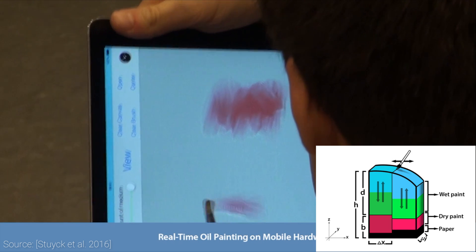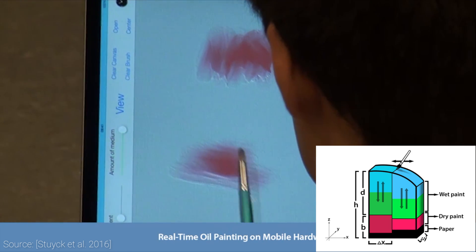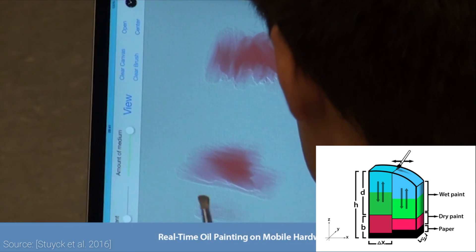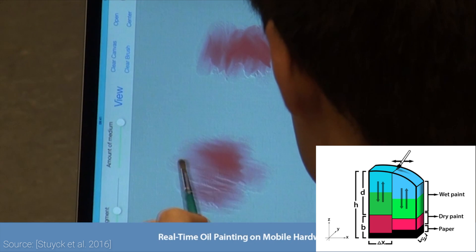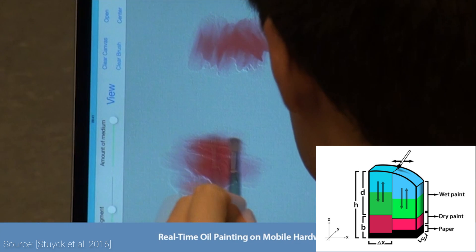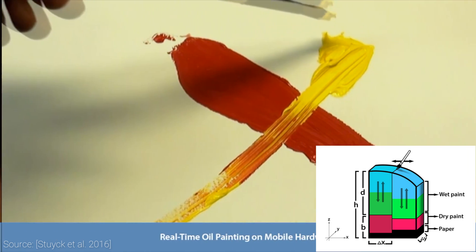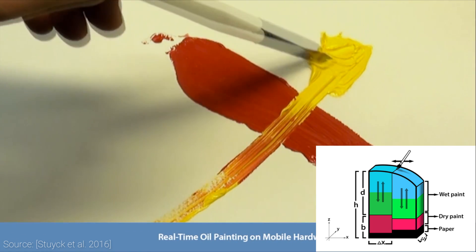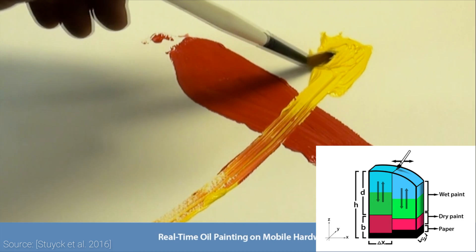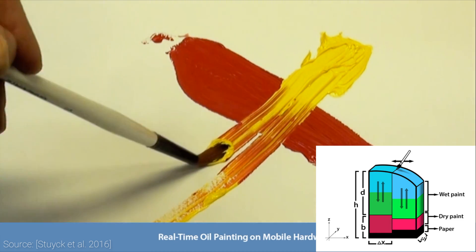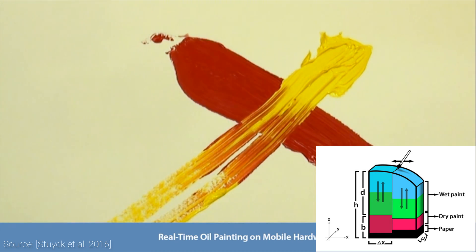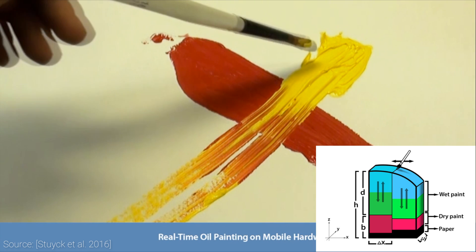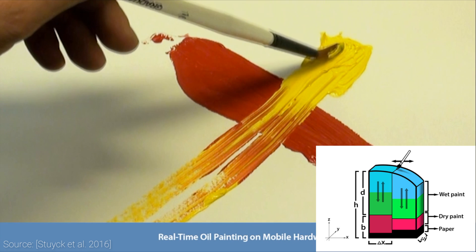And third, this technique is powered by a viscoelastic shallow water simulator that also supports simulating multiple layers of paint. This is particularly challenging as the inner paint layers may have already dried when adding a new wet layer on top of them. This all has to be simulated in a way that is physically plausible.